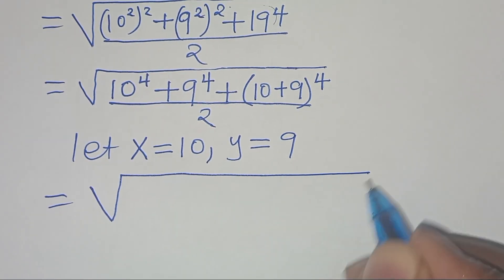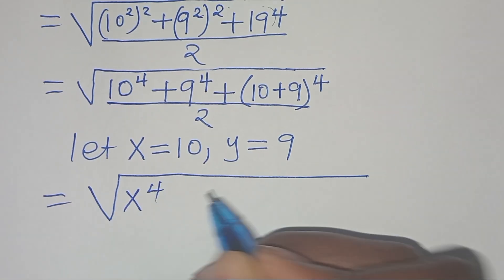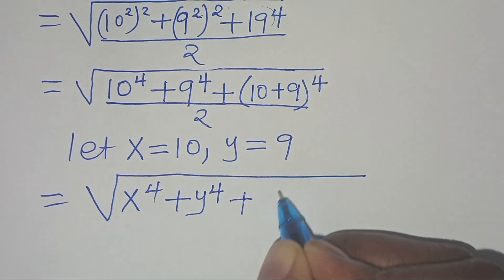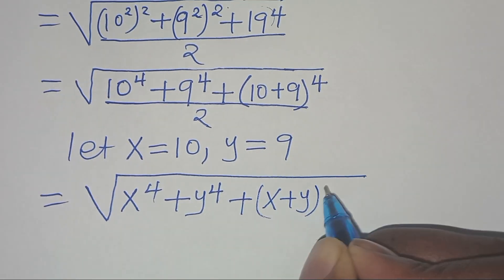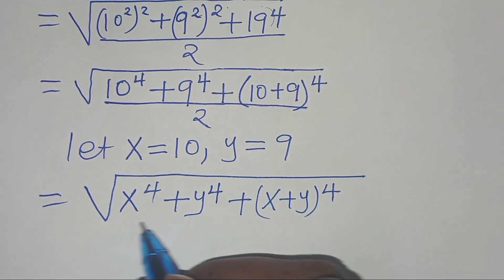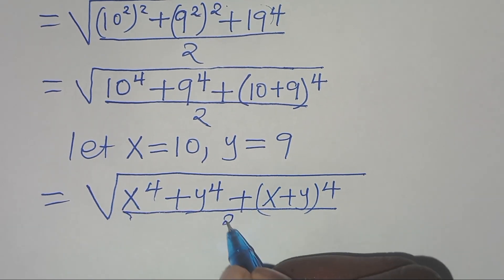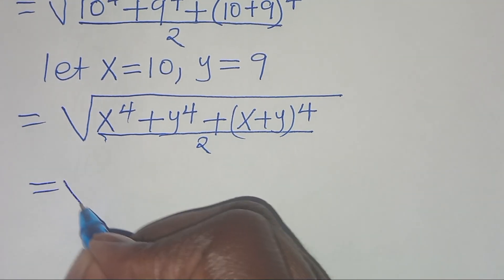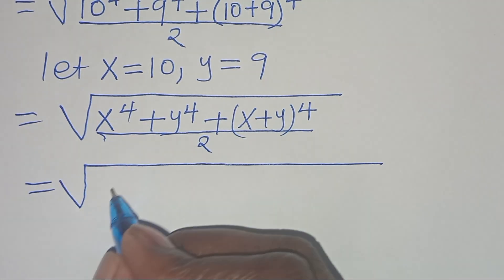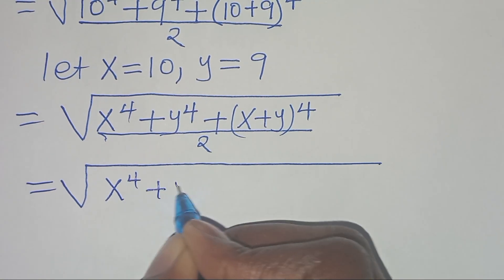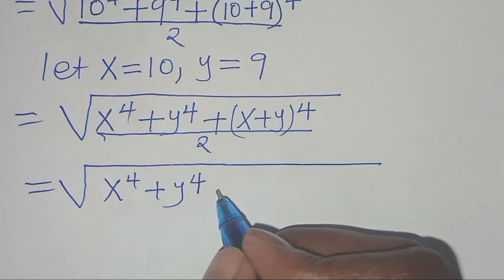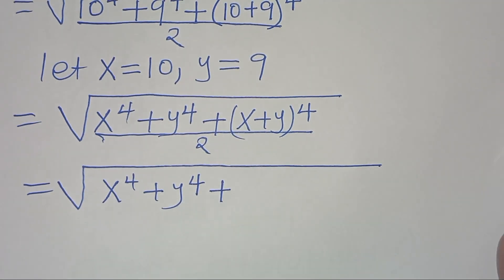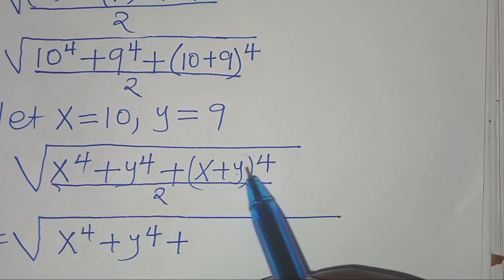Substituting, this implies that we have the square root of x to power 4 plus y to power 4, then plus x plus y raised to power 4, all divided by 2. For the term x plus y raised to power 4, we can apply the binomial expansion to expand this.